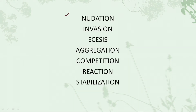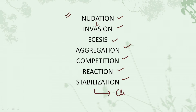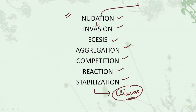Now let's discuss the various stages of succession. We have these main stages: first is nudation, after that invasion, then ecesis, then aggregation, competition, reaction, and stabilization. After stabilization, we have our climax community. All these steps run in a sequential format, which results in the final climax community formation.